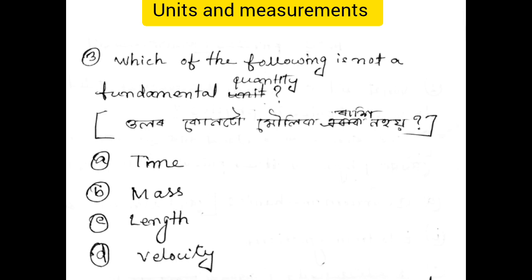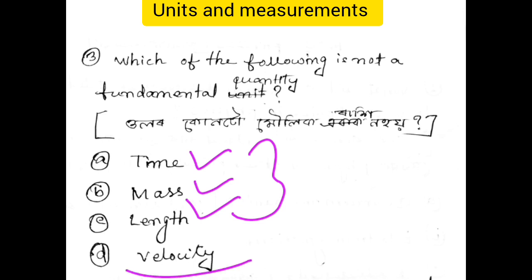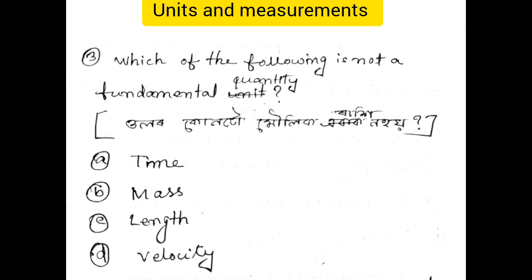Perhaps next: which of the following is not a fundamental quantity? The moolik (fundamental) quantities include time, mass, and length. Velocity is not a fundamental quantity — it is a derived quantity, not a direct moolik quantity.